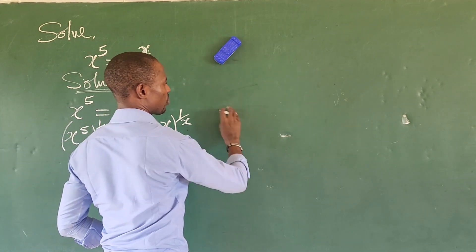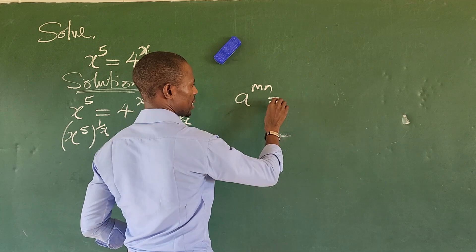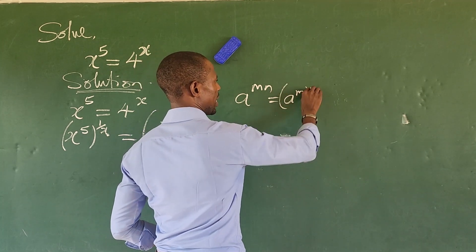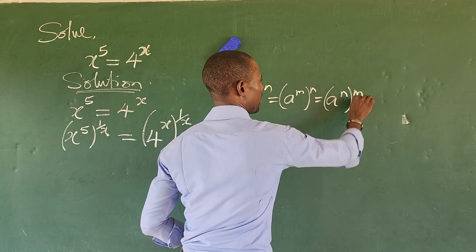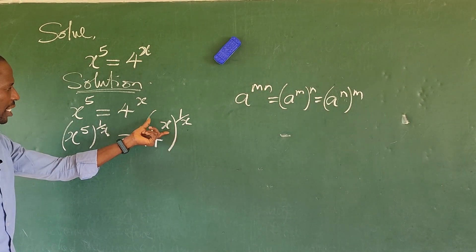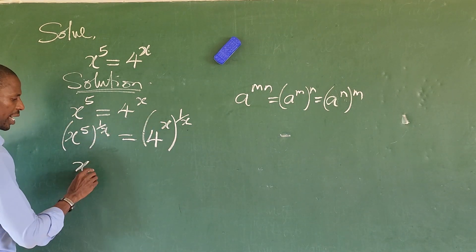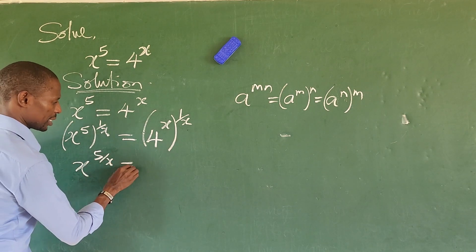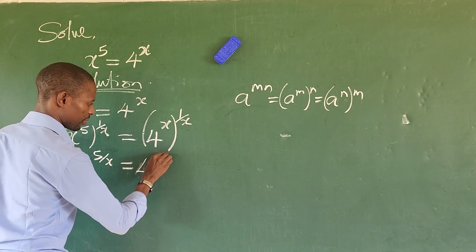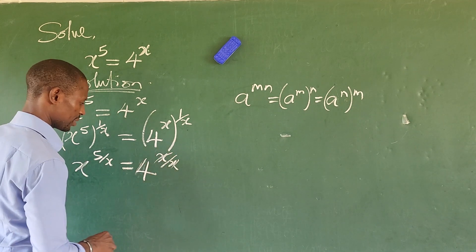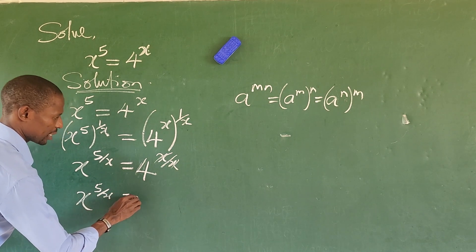If you remember the law of indices, which says that if you have a to the power of mn, this is equal to a to the power of m, bracket n. So if we apply this, we open up the exponents. This will give us x to the power of 5 over x, equal to 4 to the power of x over x. Since x over x equals 1, we end up with x to the power of 5 over x equal to 4.